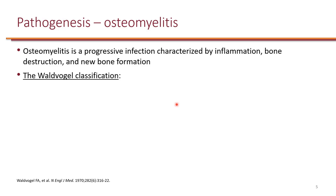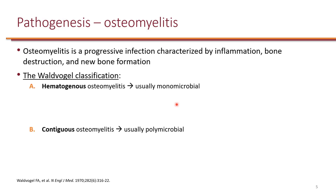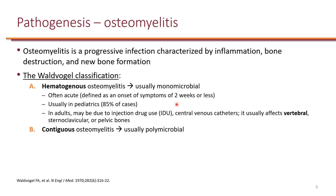Osteomyelitis is a progressive infection that involves inflammation as well as bone destruction and new bone formation. It is generally classified into hematogenous osteomyelitis as well as contiguous osteomyelitis. Hematogenous osteomyelitis, which is often monomicrobial, is more common in pediatrics — 85% of cases occur in pediatric patients. Hematogenous essentially means that the source of bacteria is from blood, so bacteremia leading to osteomyelitis.